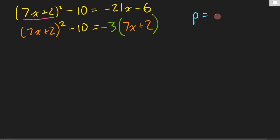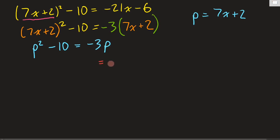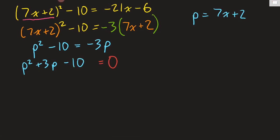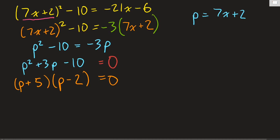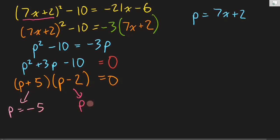So let's do our substitution: p = 7x + 2. This becomes p² - 10 = -3p. We need to set this equal to 0, so we get p² + 3p - 10 = 0. Now we have a quadratic that factors nicely. We need two numbers that multiply to -10 and subtract to 3. Sure enough, 5 minus 2 is 3, so we want positive 5 and negative 2. That gives us two solutions: p = -5 and p = 2.